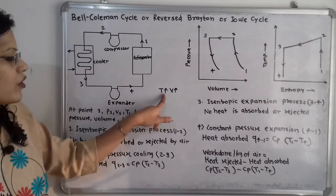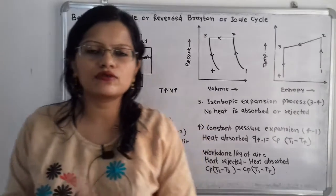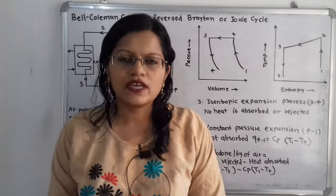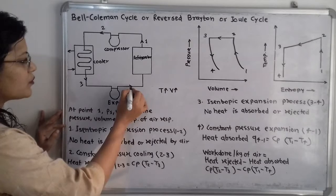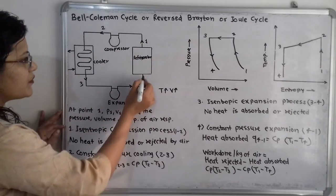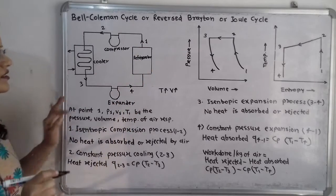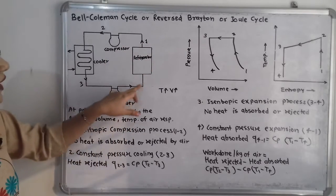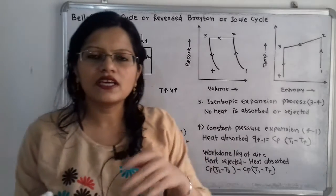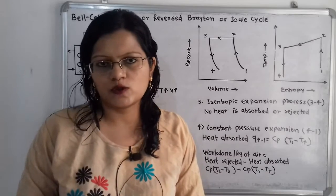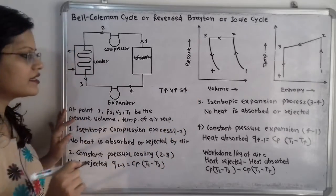Because temperature increases, this is a heat addition process. The expansion takes place in the refrigerator. This is process 4 to 1: before the refrigerator is point 4 and after is point 1. As temperature increases in this expansion process, entropy also increases.